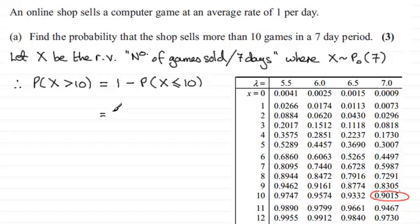So it's just going to be a case of doing 1 minus 0.9015 and that comes to 0.0985. All right.